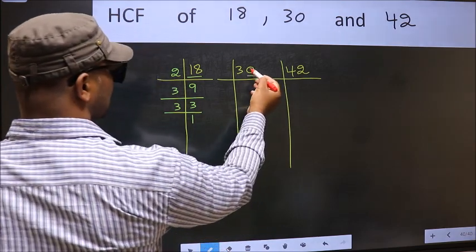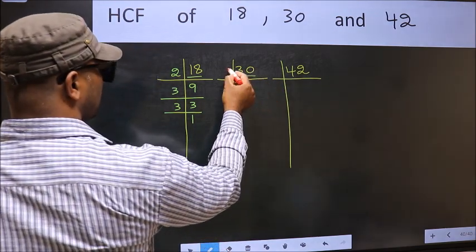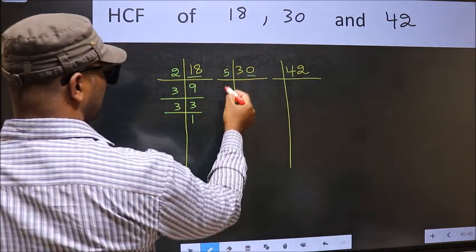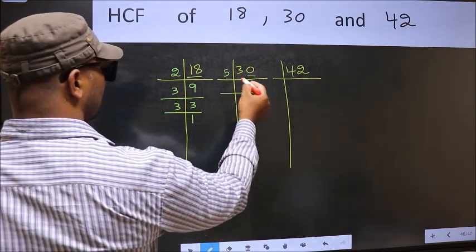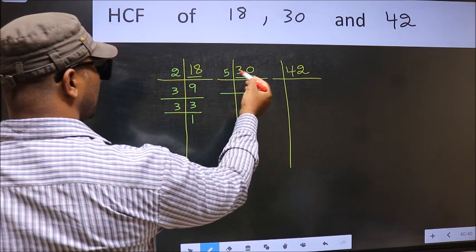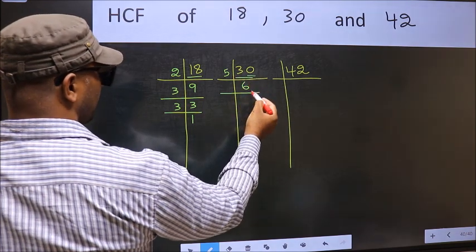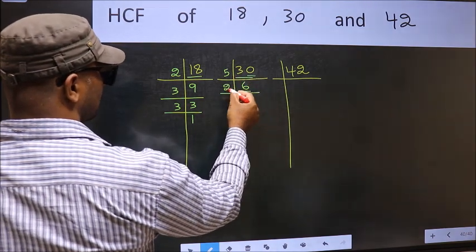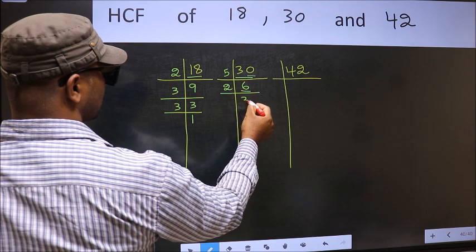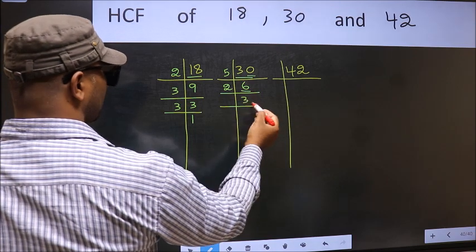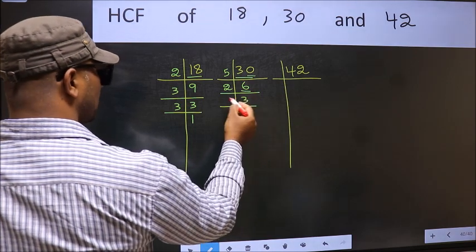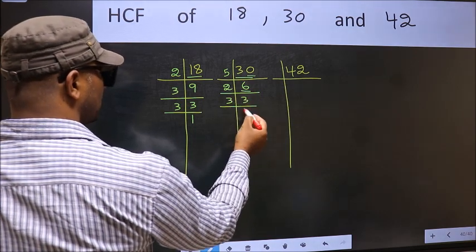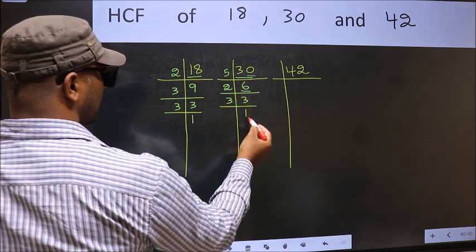The next number is 30. The last digit is 0, so take 5. When do we get 30 in the 5 times table? 5 times 6 is 30. Now 6 is 2 times 3. Now 3 is a prime number, so 3 times 1 is 3.